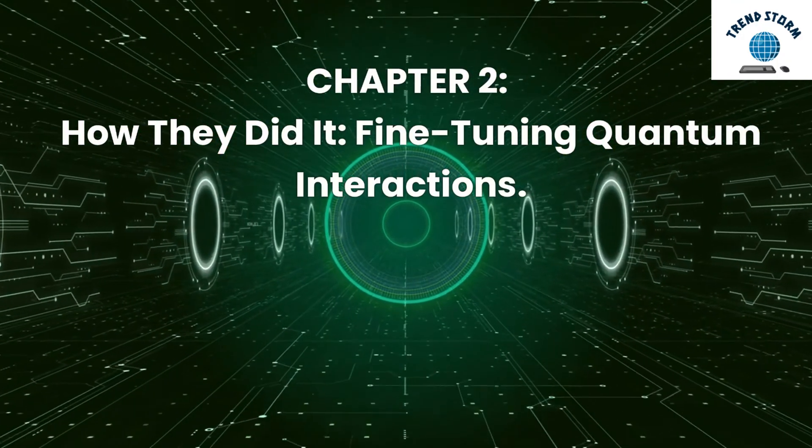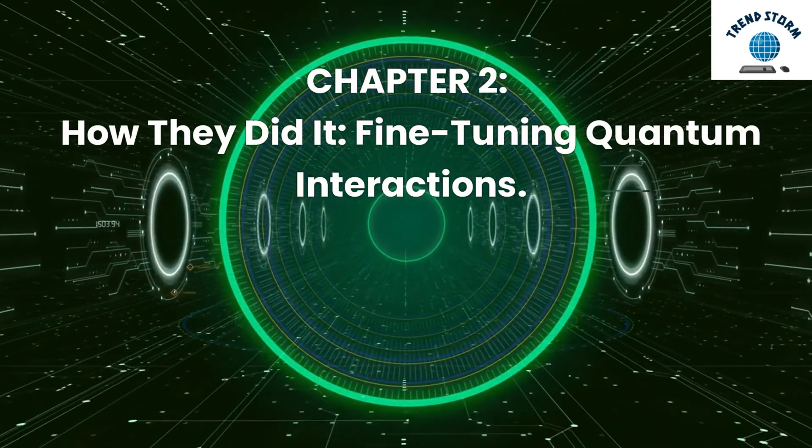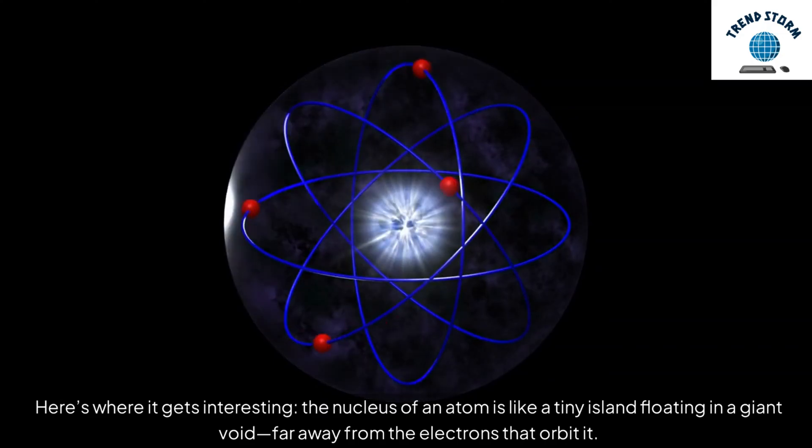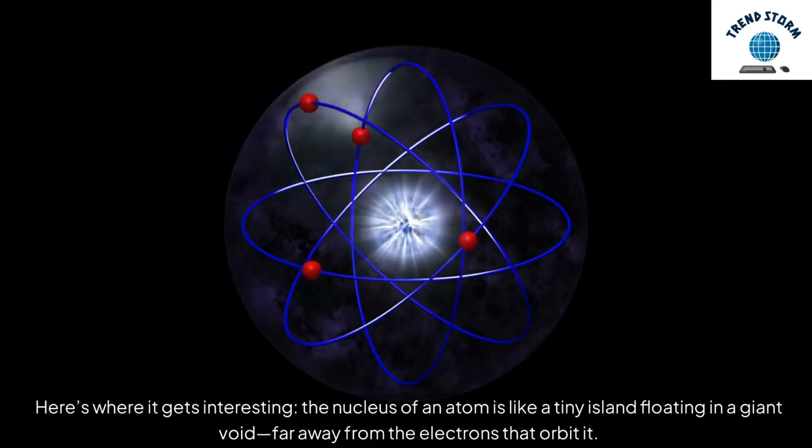Chapter 2: How They Did It? Fine-Tuning Quantum Interactions. Here's where it gets interesting. The nucleus of an atom is like a tiny island floating in a giant void, far away from the electrons that orbit it.